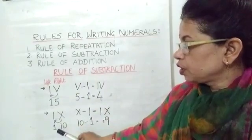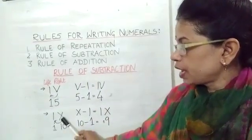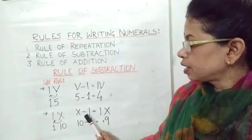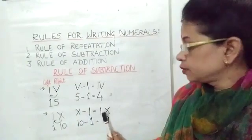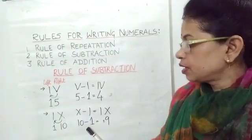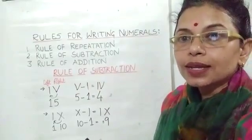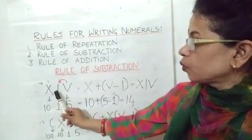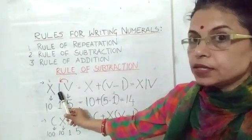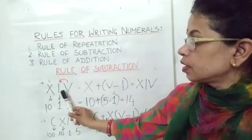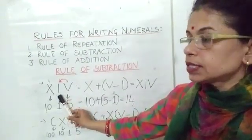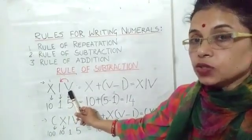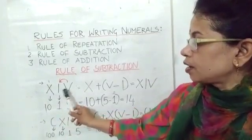Similarly, in the second example IX: I is a smaller value written to the left side of X, which has a bigger value of 10. So we write it as X minus I, which becomes IX, and 10 minus 1 which is equal to 9. The second point in the rule of subtraction is: when a smaller number is written between two larger numbers, then the smaller number is always subtracted from the larger number which is just next to it. For example, XIV.